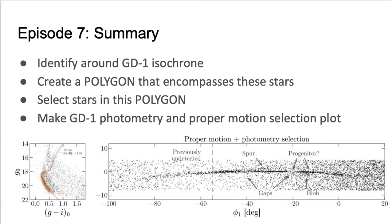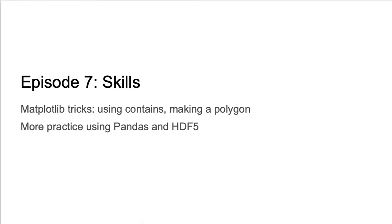The final step before reproducing the results of figure one in Price, Whelan, and Binaca is to create a filter around the main sequence of GD1 in a G-i color magnitude diagram. To do this, we read in the GD1 isochrone file which was included in the student download directory. We then create a polygon around the main sequence and exploit Matplotlib to create a mask that includes only stars in this polygon. We apply that mask to the results from episode 6 to create a spatial plot of the GD1 stream with our final sample. This episode gives learners more experience with Pandas and the HDF5 file format, and shows them a Matplotlib trick of creating a polygon and then using the contains method to select points inside that polygon.